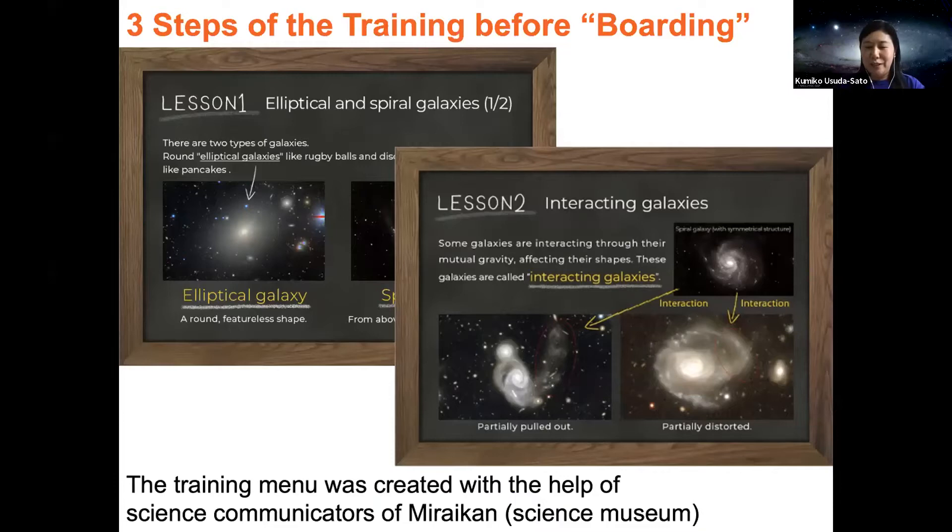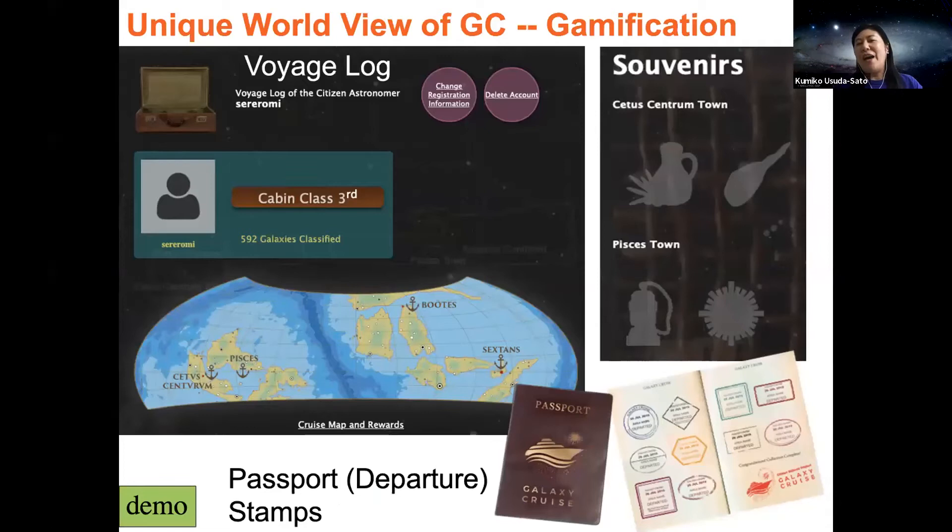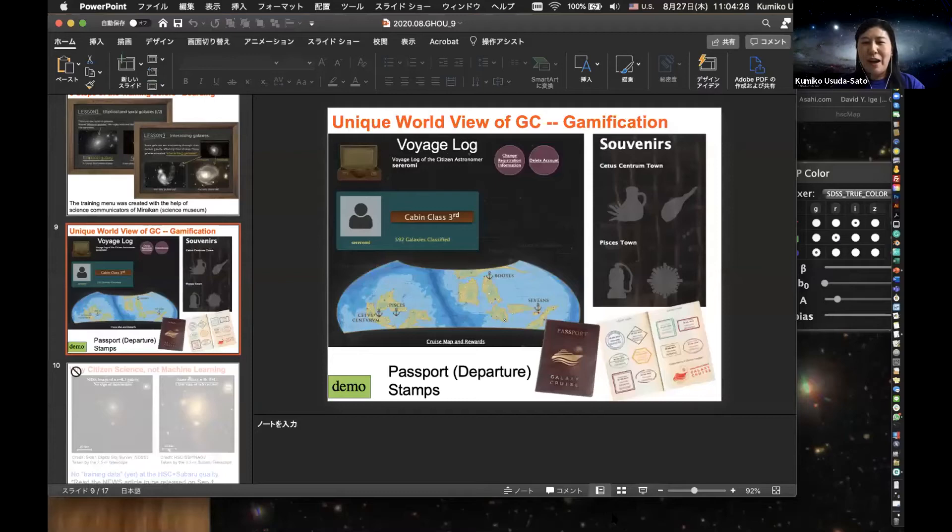We developed three steps of training menu before they get on board Galaxy Cruise. We gamified our activities. When you register as a citizen astronomer and log in, you can see your own voyage log. Each citizen astronomer starts from the fourth cabin class, and as you classify more and more galaxies, you are graded up to third, second, first, and deluxe. Look at this map—this is the survey map of Subaru HSC, but it looks like a nautical chart. We modified the original survey map to the nautical chart to make our unique world view. We get on the boat Galaxy Cruise and sail to explore the cosmic ocean together.